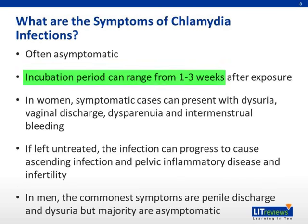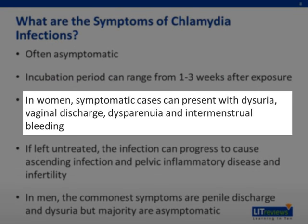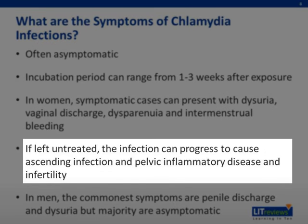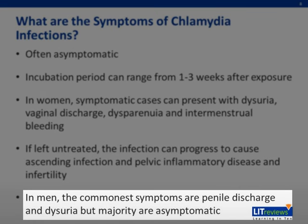After an incubation period of about 1 to 3 weeks, in women, symptomatic cases can present with dysuria, vaginal discharge, dyspareunia, and intermenstrual bleeding. If left untreated, the infection progresses to cause ascending infection, pelvic inflammatory disease, and infertility. In males, the commonest symptoms are penile discharge and dysuria, but once again the majority are asymptomatic.